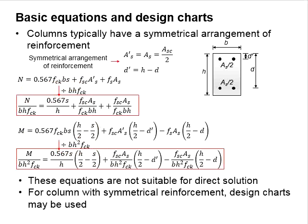On top of that, a column typically has a symmetrical arrangement of reinforcement bars left and right and top and bottom. In this case, the reinforcement area here and here will be similar. And from the diagram here, d' is equal to h minus d when the section is symmetrical.